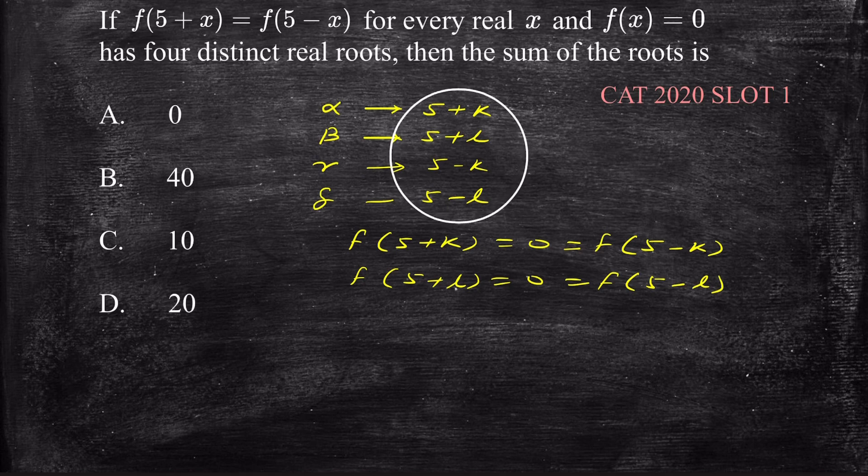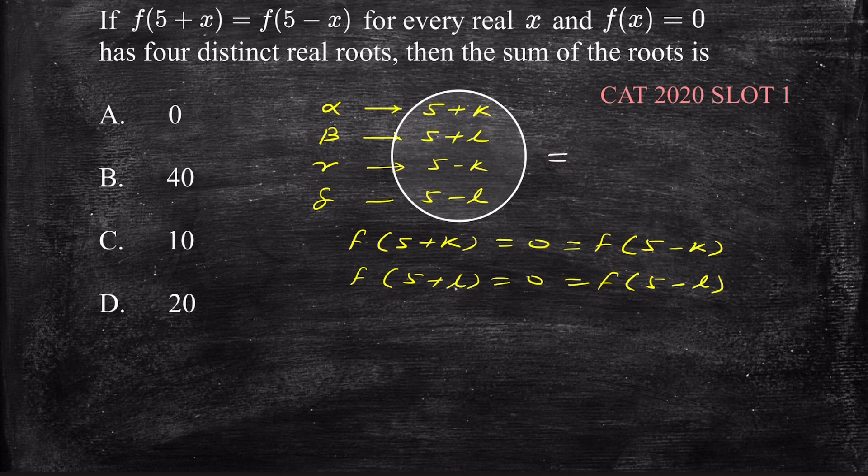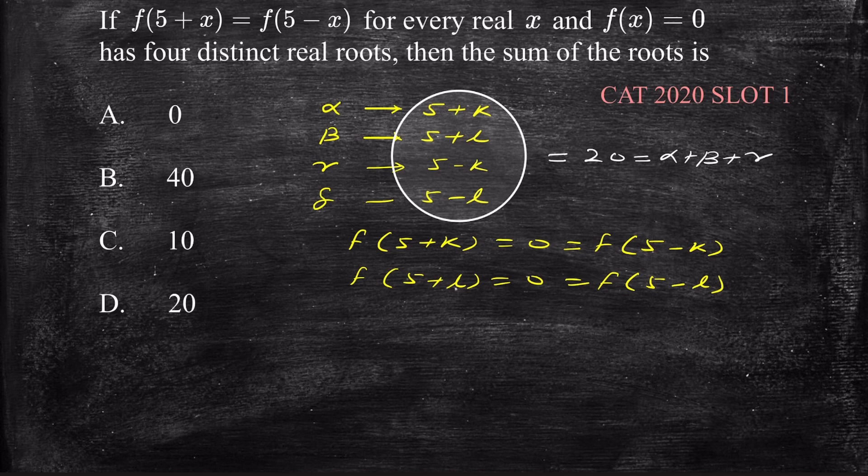And these four roots can be easily added and we'll get final value which is equal to 20. Alpha plus beta plus gamma plus delta should be equal to 20. So the answer to this question is option D.